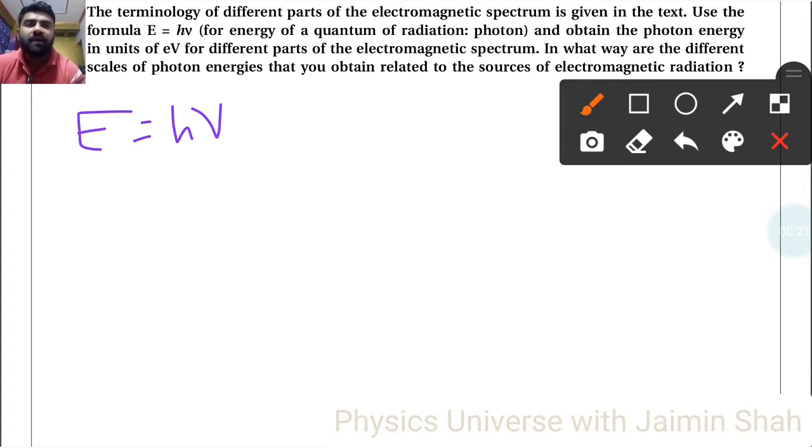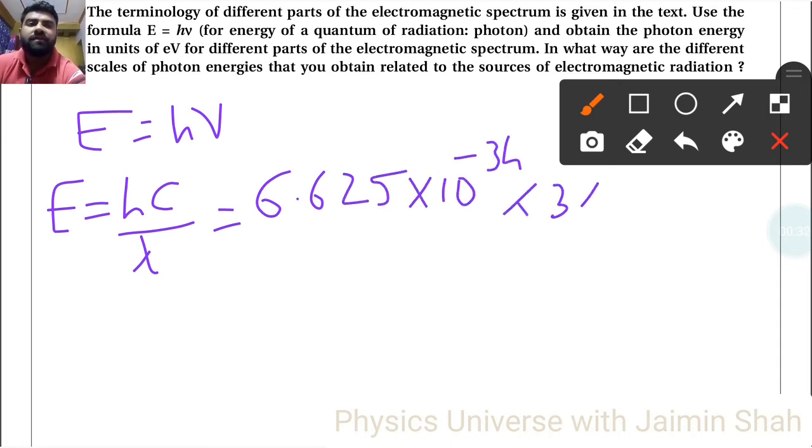So the formula for that is hc upon λ. Now h is 6.625 × 10^-34, c is 3 × 10^8, and λ we have to change according to the values of different metals and different objects.